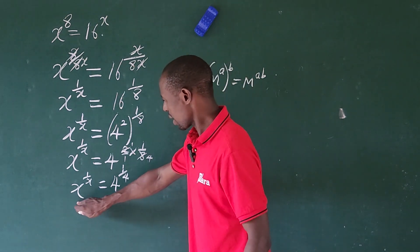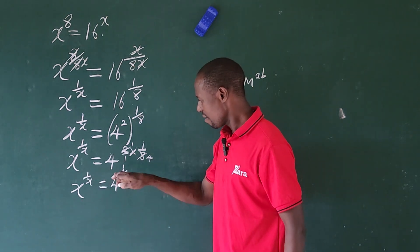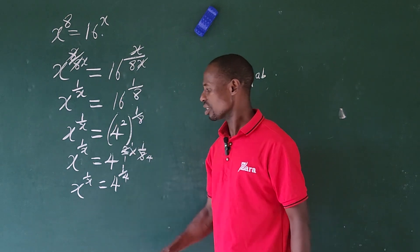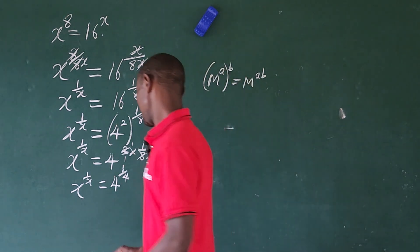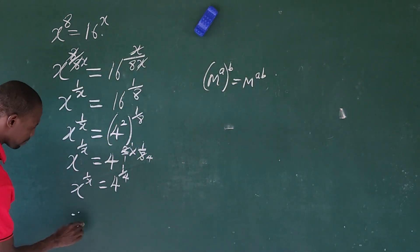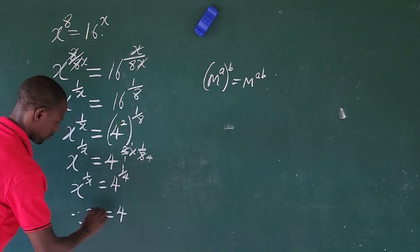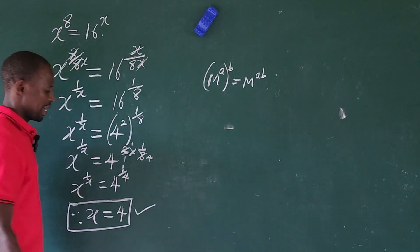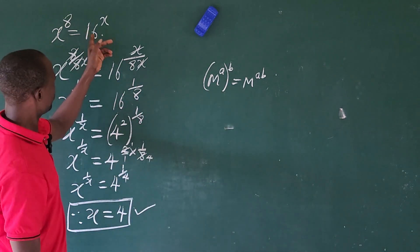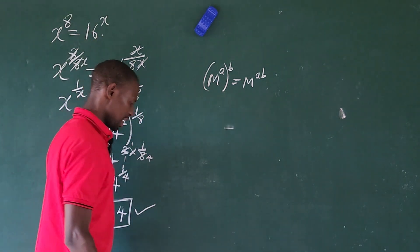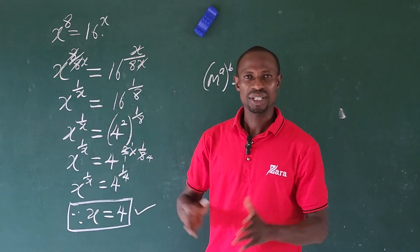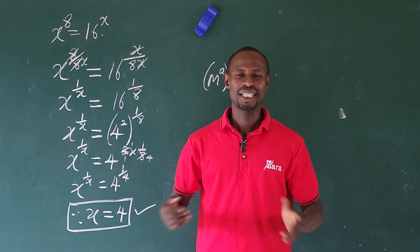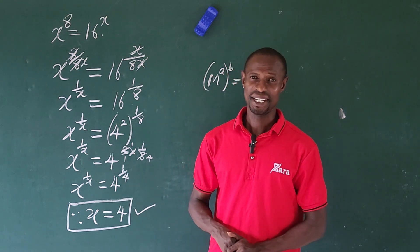Applying our rule: since x to the power of 1 over x equals 4 to the power of 1 over 4, it follows that x equals 4. Therefore x is equal to 4. If you substitute this value back into the original equation, it will be satisfied. Thank you for watching — that's all I have for today. Bye for now!